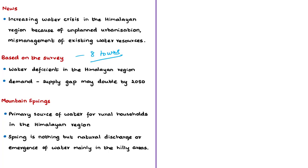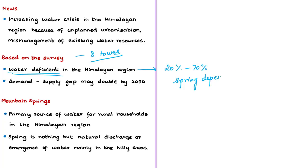Based on the survey, these areas are facing water deficiency in the range of 20% to 70%. The places surveyed are extremely dependent on springs, and the survey projected that under current trends the demand-supply gap for water in the region may double by 2050. Springs are the primary source of water for drinking and agriculture for mountain households, and for many people in the region they are the sole source of water.